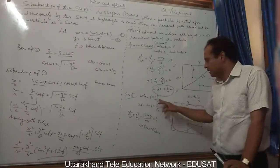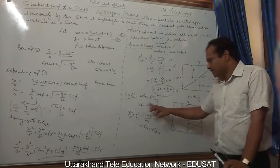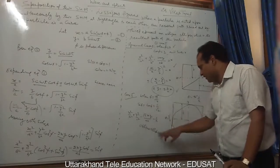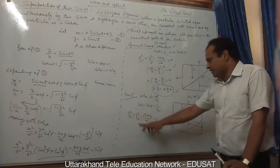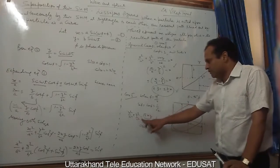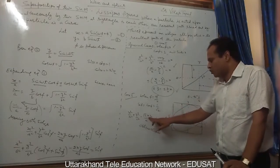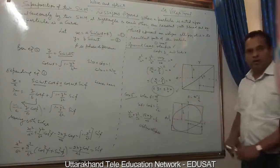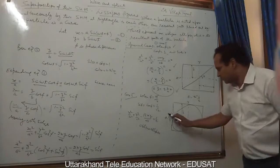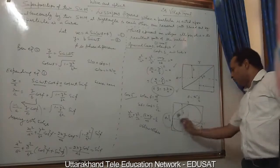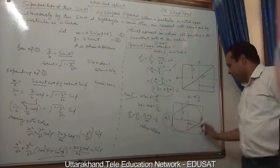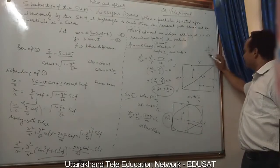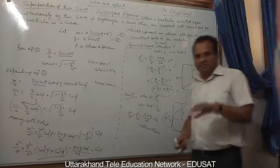Case 2: When φ = π/4, sin(φ) = cos(φ) = 1/√2. Substituting these values, the equation becomes x²/a² + y²/b² − √2·xy/(ab) = 1/2. This is the equation of an oblique ellipse — the ellipse is tilted, which is what 'oblique' means.